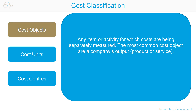Cost objects are any item or activity for which costs are being separately measured. The most common cost objects are a company's output, its product or service, but it could also be a department, a product line or a process.